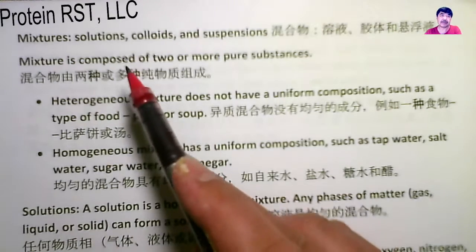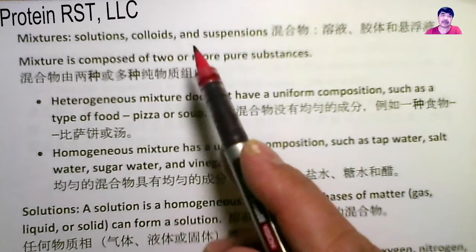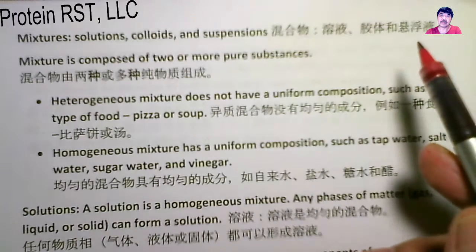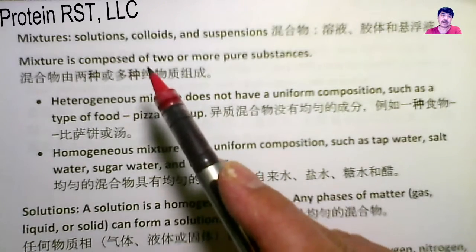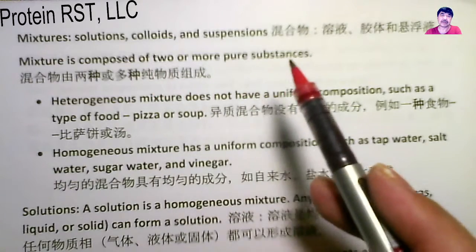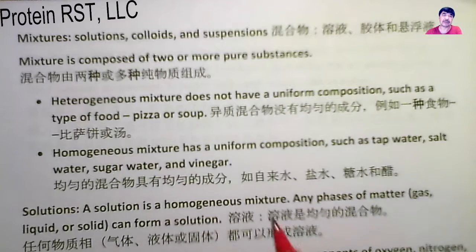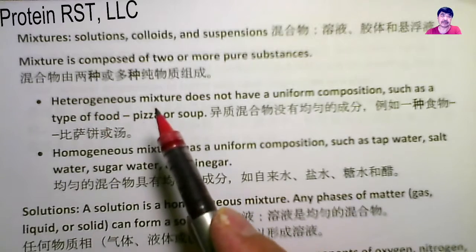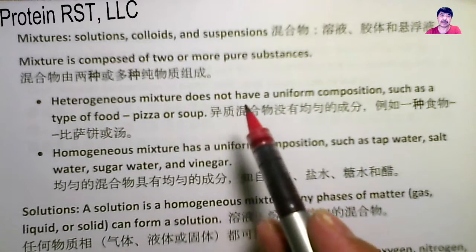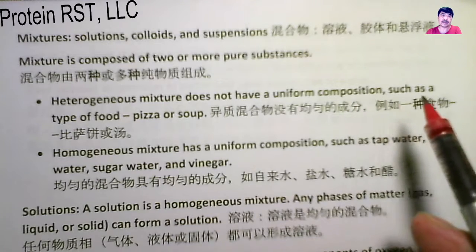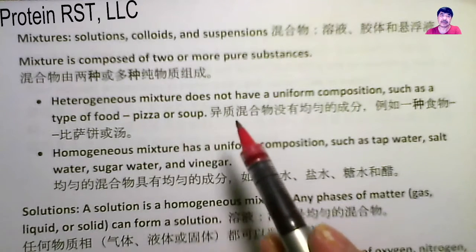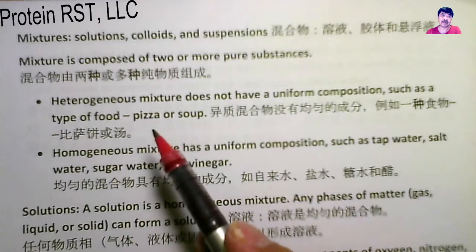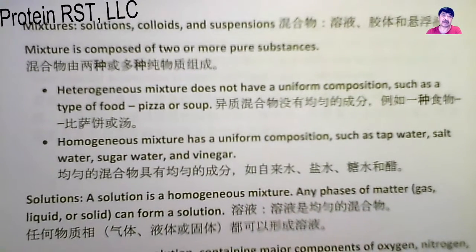Let's take a look at the mixtures: solution, colloids, and suspensions. 混合物，包括溶液、胶体和悬浮液。 Mixture is a composite of two or more pure substances. There are two types of mixtures. The first one is heterogeneous mixture. Heterogeneous mixture doesn't have a uniform composition, such as a type of food — pizza or soup. 非均质混合物，没有均匀的成分，比如一种食物，例子是pizza或者是汤，都是heterogeneous mixture.